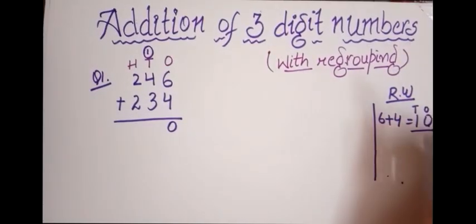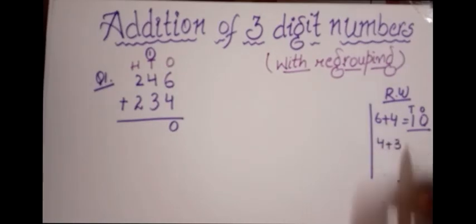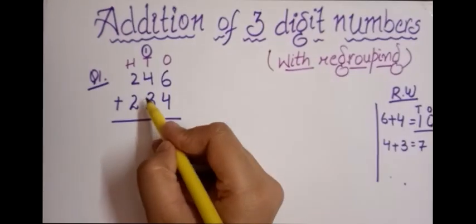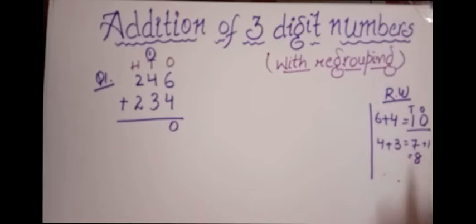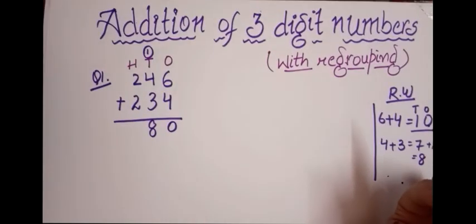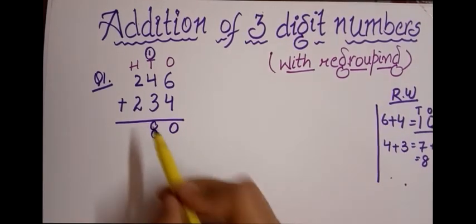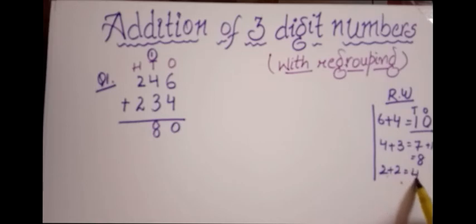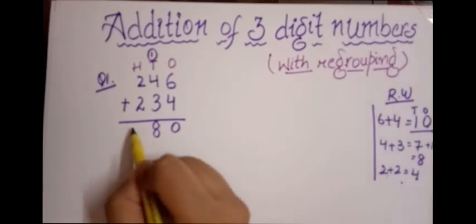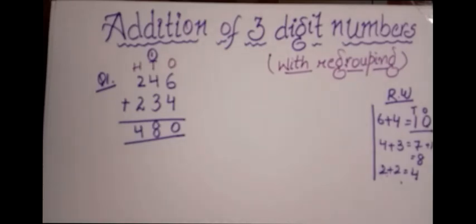Now it's the tens column's turn. Four plus three equals seven, plus the carry of one makes eight. So I write eight in the tens place. Moving to the hundreds column: two plus two equals four — no carry needed here — so I simply write four. The final answer is 246 plus 234 equals 480.